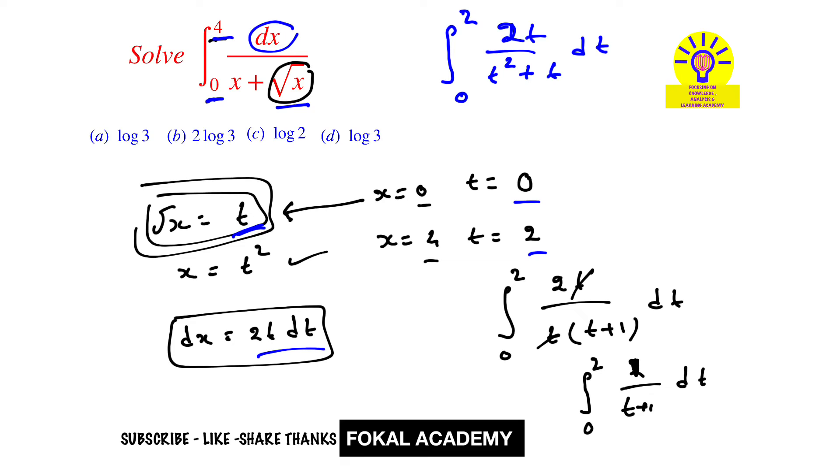So here 2 is constant value. Bring it outside. Now this is in the standard form. We know that integral of 1 by x dx is nothing but log x. So let's consider this is x value. Now it becomes 2 into log of modulus of t plus 1. So this value is equal to x value and with limits 0 to 2.